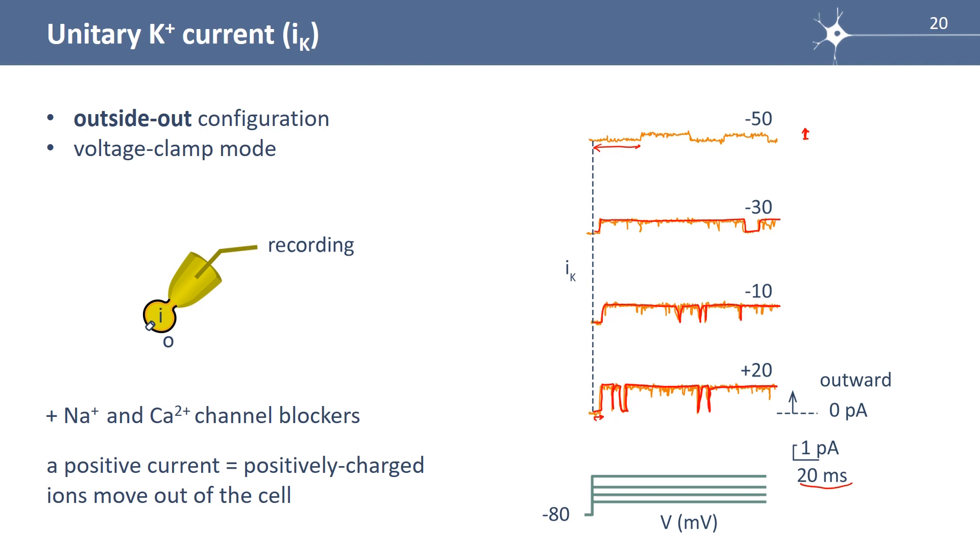So we say that this channel has two states, a closed state and an open state. To open the channel, you need to depolarize the membrane, and it closes briefly when the membrane is still depolarized. But to close, definitely, you need to repolarize the membrane. So this channel does not inactivate, and this explains why the current has a long duration during the depolarizing step.